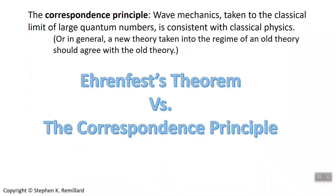First the correspondence principle, which says in general that when you have a new theory, it should work in the regime of an old theory. A case in point would be special relativity — as you slow down particles, the equations of special relativity morph into the equations of classical physics very smoothly. It works well.